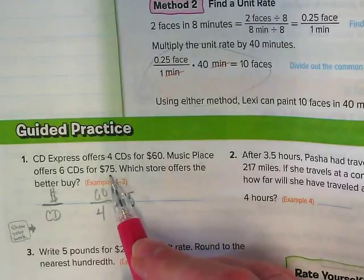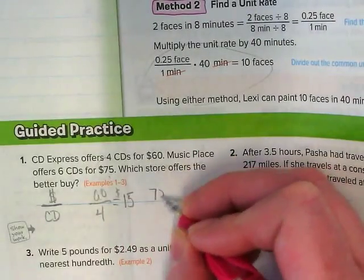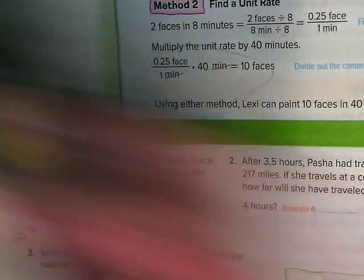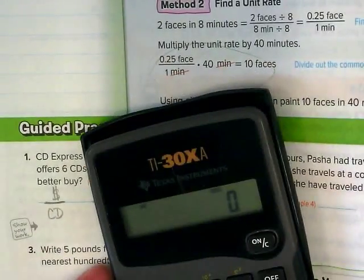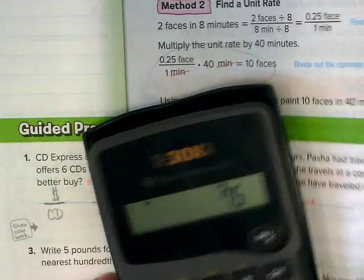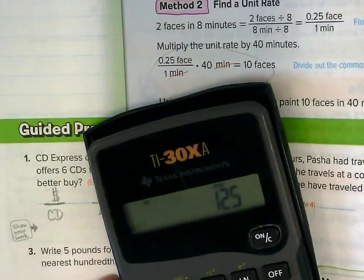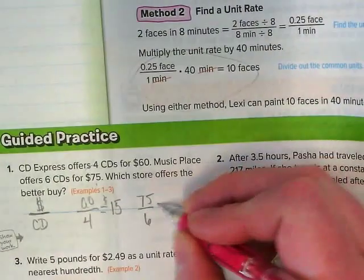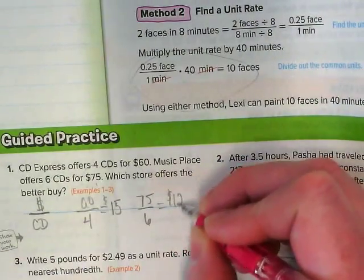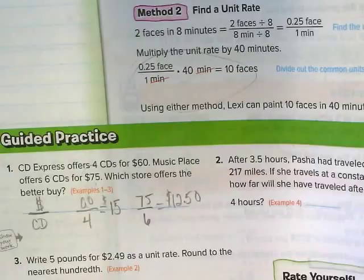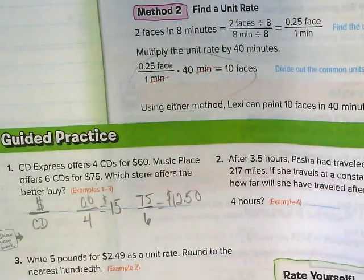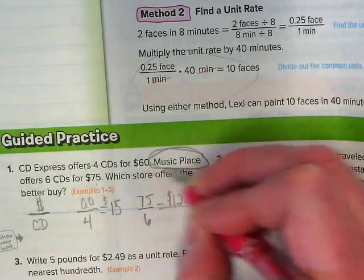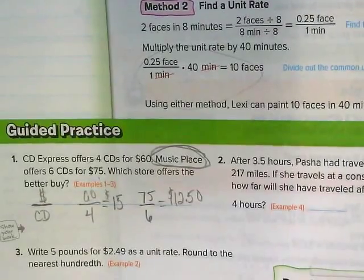The second store sells $75 and you get six CDs. Now I didn't have you all pick up a calculator, but if I do 75 divided by six, I get 12.5, which in money terms is $12.50. So which is the better place to buy CDs? Music Place would be our answer. It has the better deal.